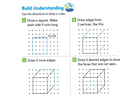Now let's take a look at page 520 under Build Understanding: Use the directions to draw a cube. We're going to follow steps A, B, C, and D. Part A asks us to draw a square with each side four units long. We make one side — one, two, three, four — then continue for all four sides. Now you've drawn a square with each side four units long.